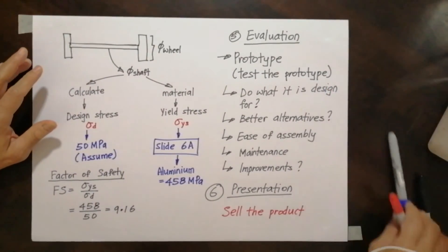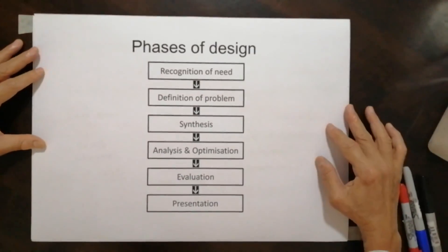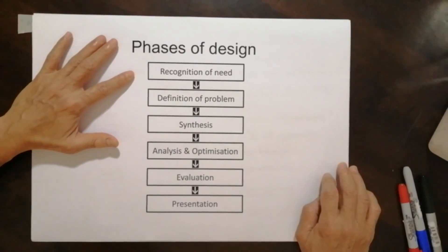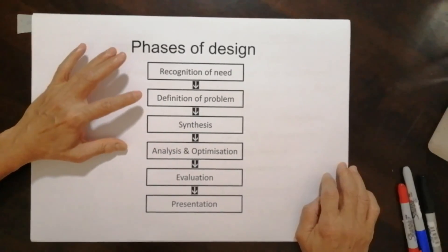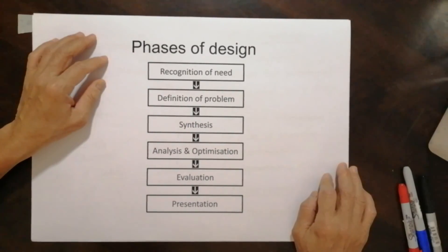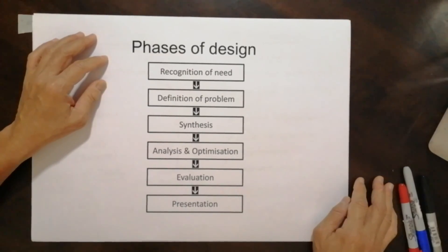Don't forget that while you sell the product, in the process you also sell yourself, your idea, your character, your behavior. Now these are the six phases of the design. In short, first there has to be a recognition of the need, then definition of the problem, come to the synthesis phase.